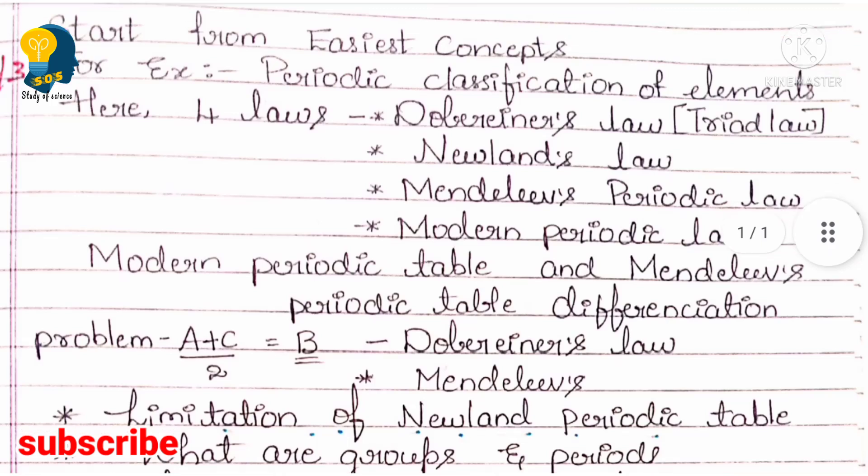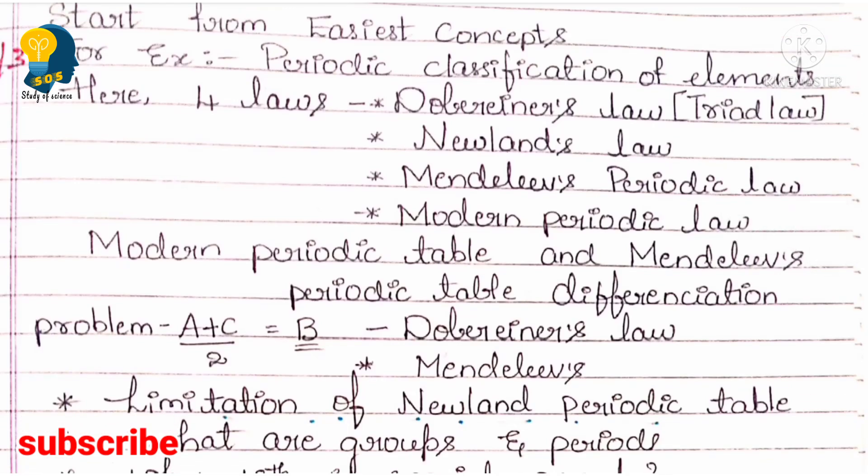Next, you need to know how to identify the average atomic mass using Dobereiner's Triad Law. In a triad, the middle element's mass is the average of the other two elements. If they give you the mass of elements A and C and ask for B, you use the formula: B = (A + C) / 2. This is an expected problem-type question.